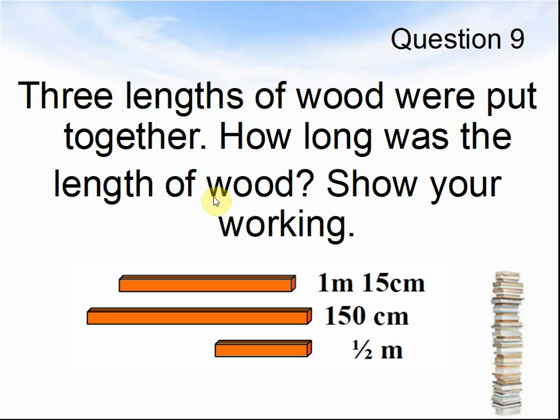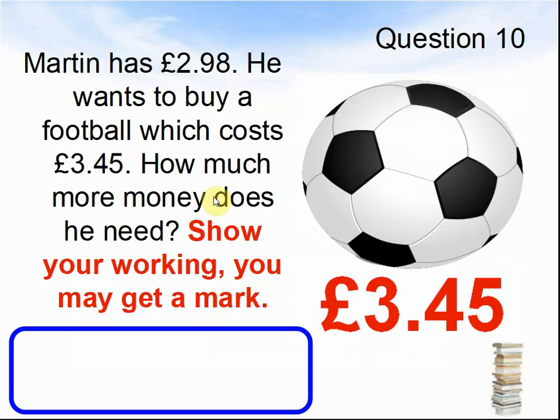Here comes question 10. Martin has £2.98. He wants to buy a football which costs £3.45. How much more money does he need? Show your working. You may get a mark. The football is £3.45. Pause the video until you are ready for the next question.